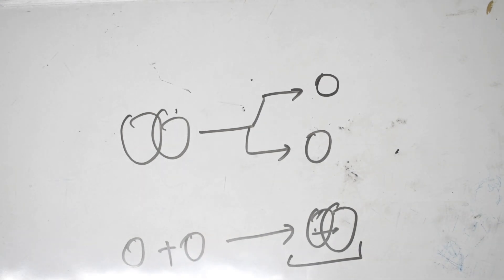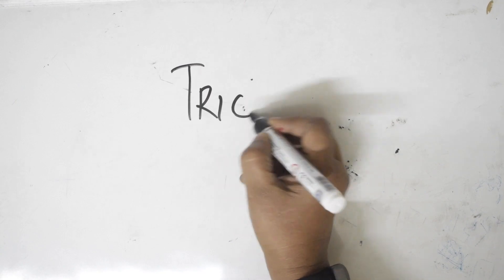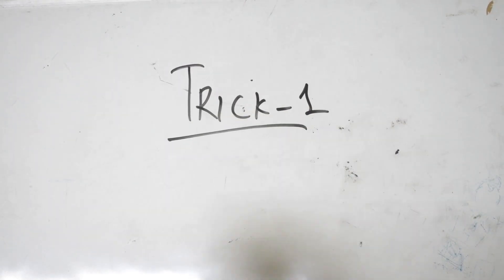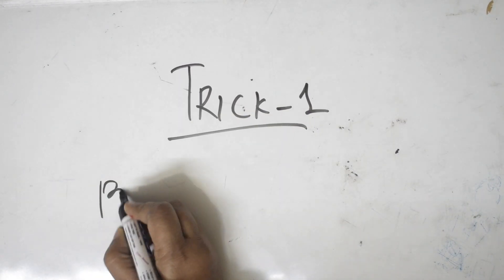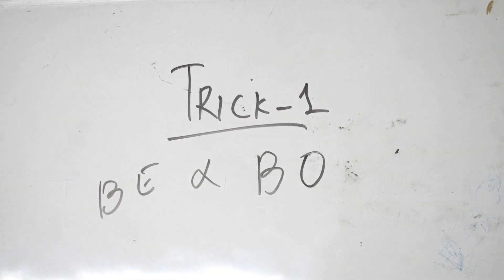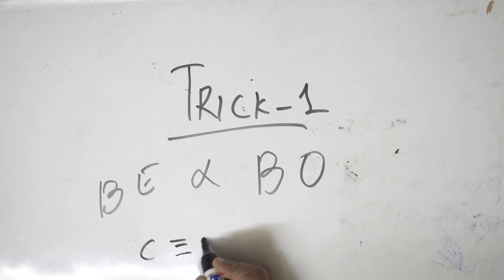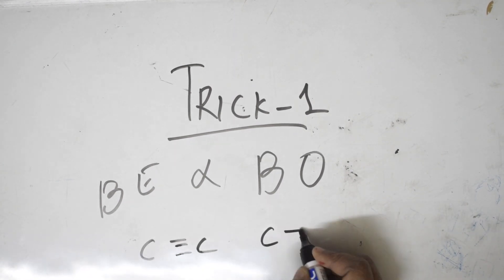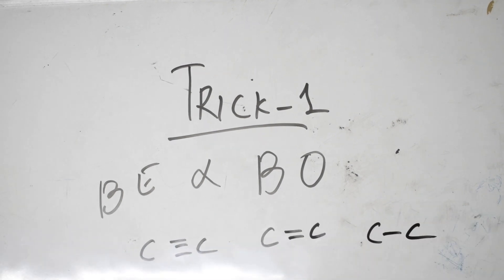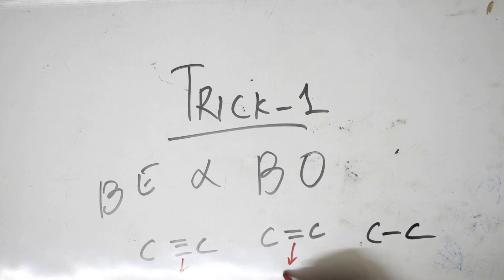Now let's look at the tricks. Trick number one: bond energy is directly proportional to bond order. For example, if I have C≡C (triple bond), C=C (double bond), and C–C (single bond), the bond orders are three, two, and one respectively.